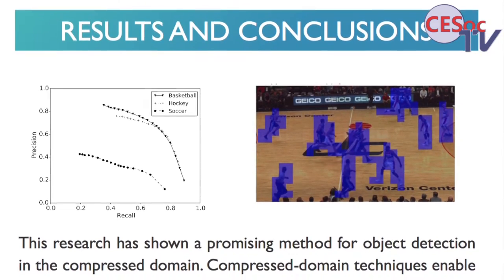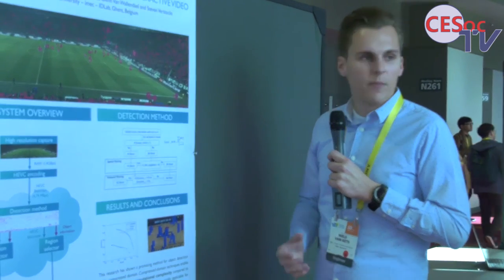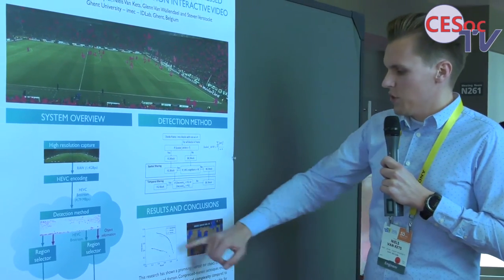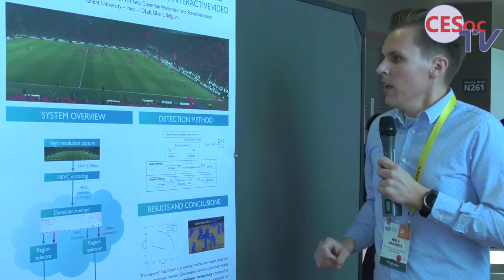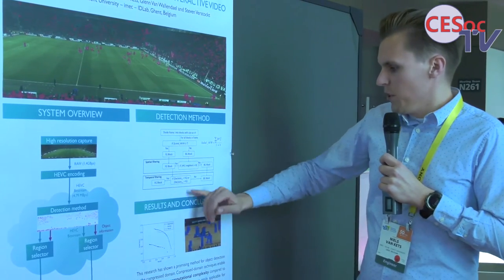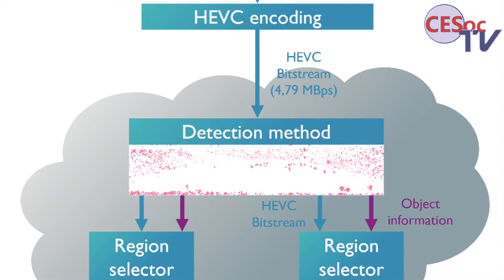Using this detection combined with spatial and temporal filtering, we get a pretty high precision rate. We tested it on three separate videos: basketball, hockey, and soccer. The soccer one performs less well because the objects are very small — the camera capture is very wide, making the objects small and resulting in a lot of false positives. But for basketball and hockey, moving objects are well detected. Our method also significantly reduces computational power, as we only need to process the 4.8 megabit stream instead of the 1.4 gigabit stream.